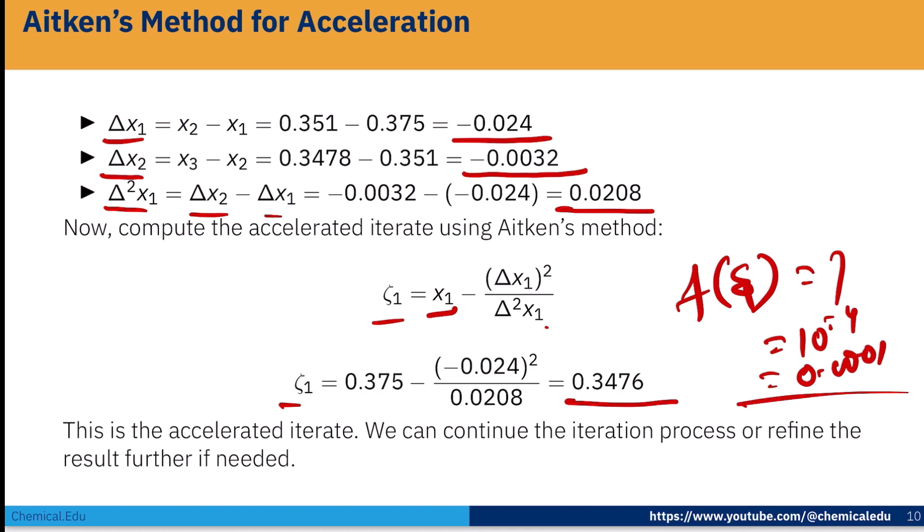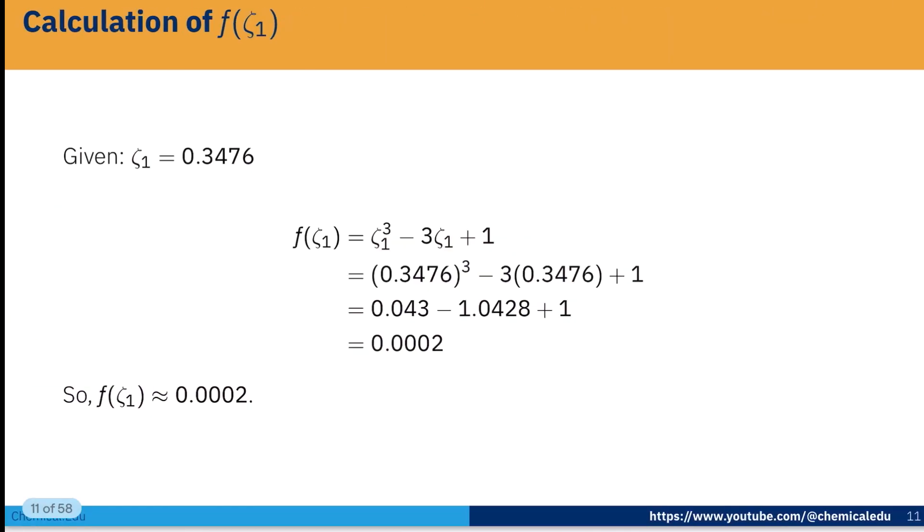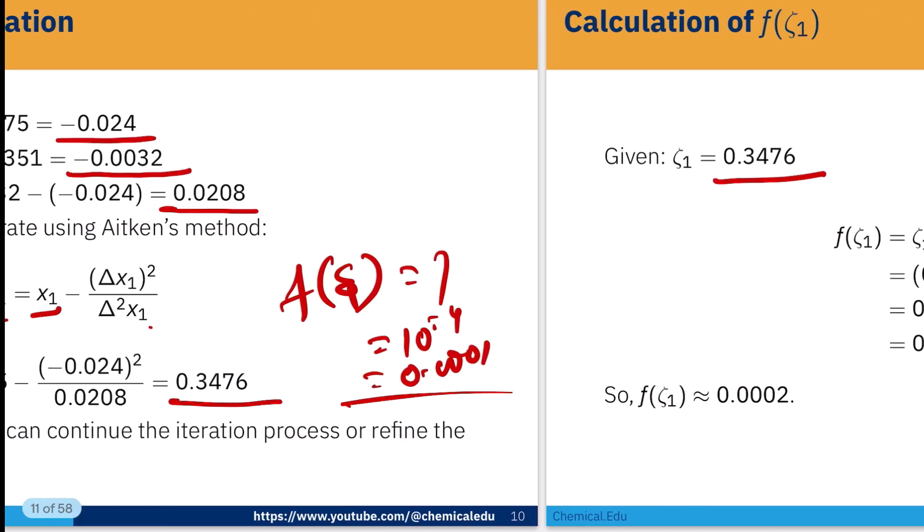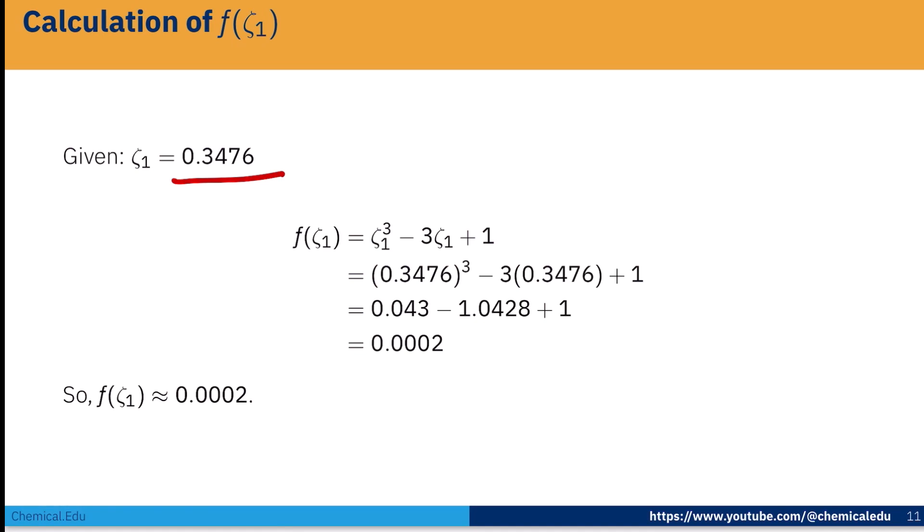Now this is the accelerated iterate. We can continue the iteration process or refine the result further if needed. So ζ_1 is this one, we got that from this, 0.3476. We already did that.